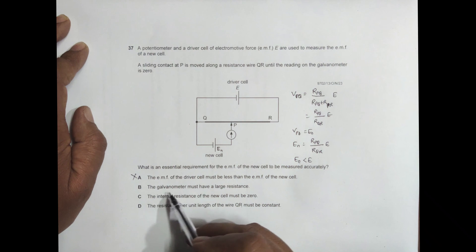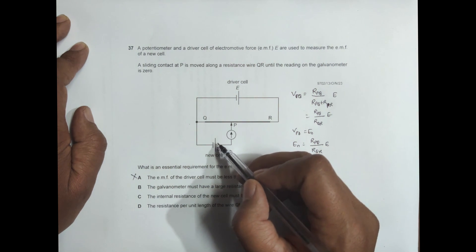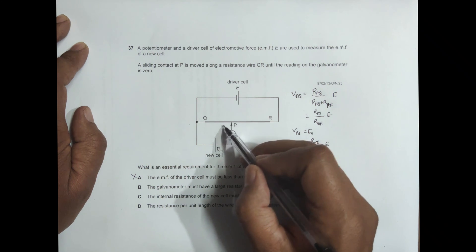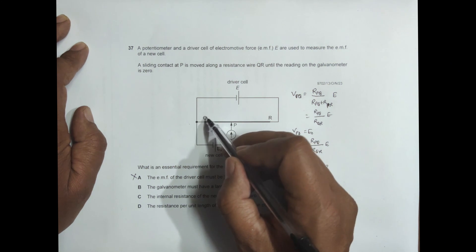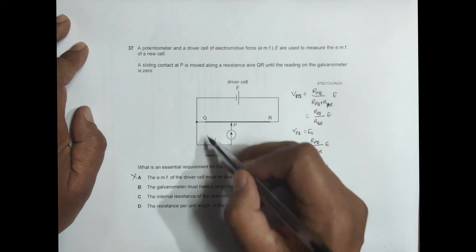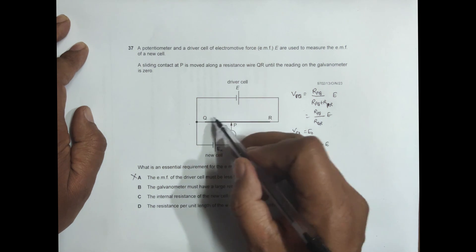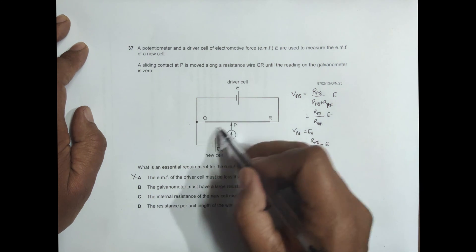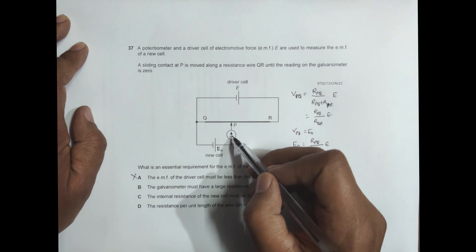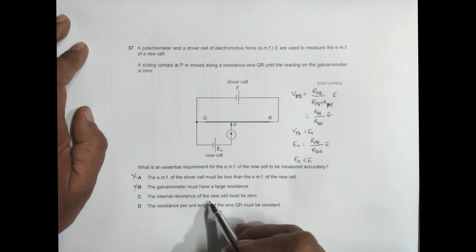The next option says the galvanometer must have a large resistance. This is not true. When V_PQ is small at a short length, a small current flows and the galvanometer gives some reading. When V_PQ is large, the current flows in the opposite direction. The galvanometer needs to be sensitive enough to detect these differences, so large resistance is not the key requirement. This option is also untrue.